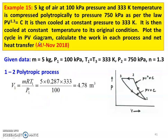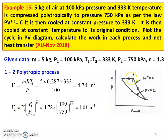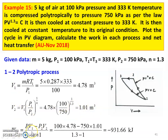For the first process: V1 = MRT1/P1 = 5 × 0.287 × 333 / 100 = 4.78 m³. V2 = V1 × (P1/P2)^(1/N) = 4.78 × (100/750)^(1/1.3) = 1.01 m³. Work done for the polytropic process: W12 = (P1V1 − P2V2) / (N − 1) = (100 × 4.78 − 750 × 1.01) / (1.3 − 1) = −931.6 kJ. Work is done on the gas; it is a compression process.